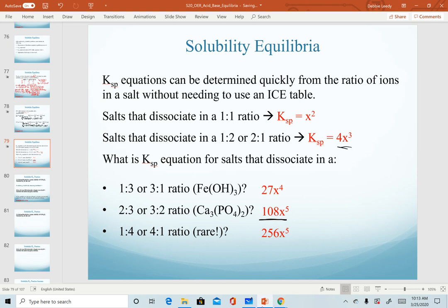I will encourage you to work through an example, something like iron 3 hydroxide. You should realize that it solves out to be a 27 x to the fourth. And then I have a 1 to 4 or 4 to 1 ratio here. These are rare. In fact, so rare I couldn't think of an example for this slide. But if you were to solve it out, you would see that it comes out to be 256 x to the fifth.